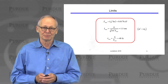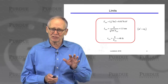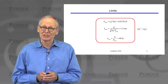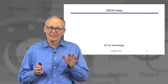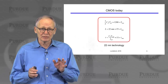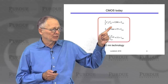That very simple model allowed us to establish some fundamental limits. Minimum switching energy was KT log 2, which is a very small number. Minimum channel length is on the order of a nanometer or so. Minimum switching time is about 40 femtoseconds. We then compared those fundamental limits to where we are today, and what we found is that we are surprisingly close to some of those fundamental limits.